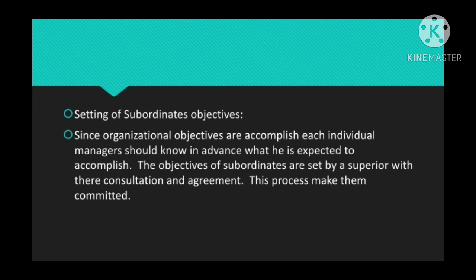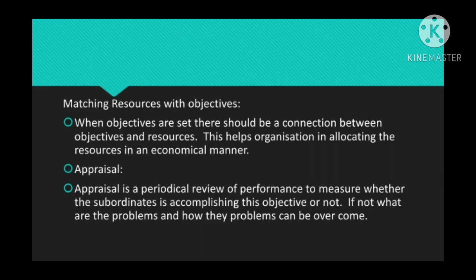The third step is matching resources with the objectives. When objectives are set, there should be a connection between objectives and available resources. For example, if we have a target of 100 units but no raw materials, we cannot achieve it. So we have to match the objectives with available resources. This helps the organization in allocating resources in an economical manner.